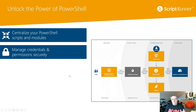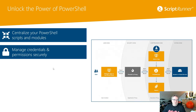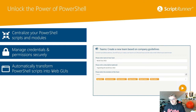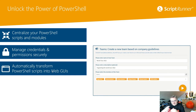Now, thinking about taking a script and making it available to Helpdesk or end users — it has to be easy, because these aren't people familiar with PowerShell, and you don't want to write any UI code. What ScriptRunner does is take the information from your scripts and automatically transform it into a web user interface — a form. Here's a simple example for creating a new team, showing three visible parameters: the team name, description, and members. All other parameters are still there in the background.